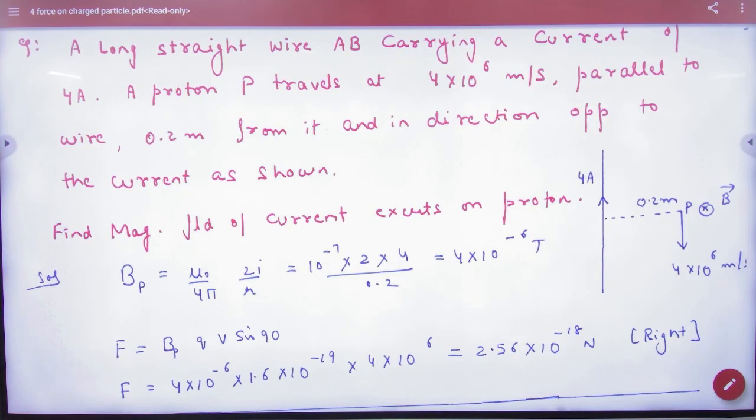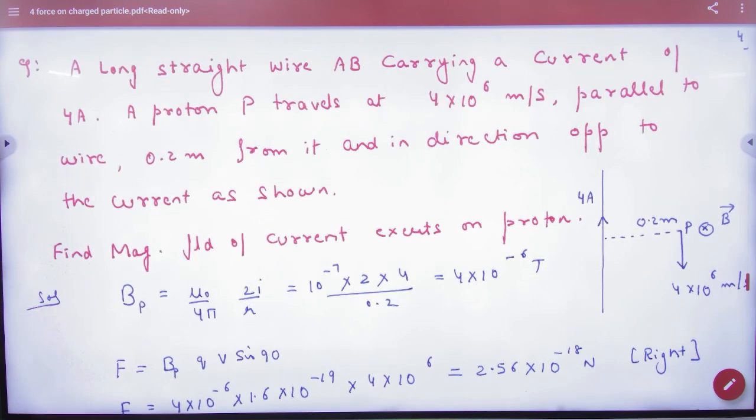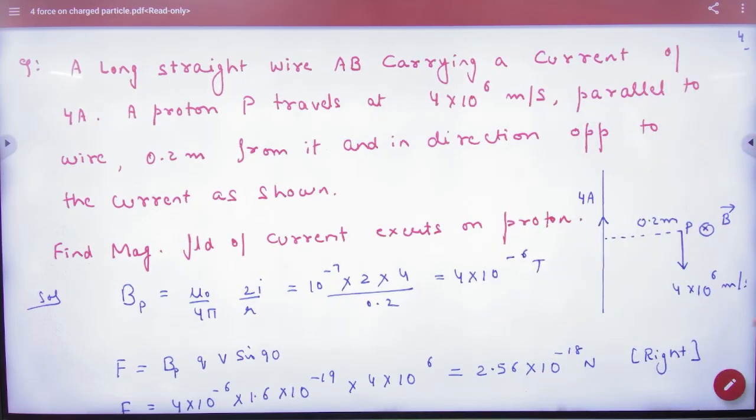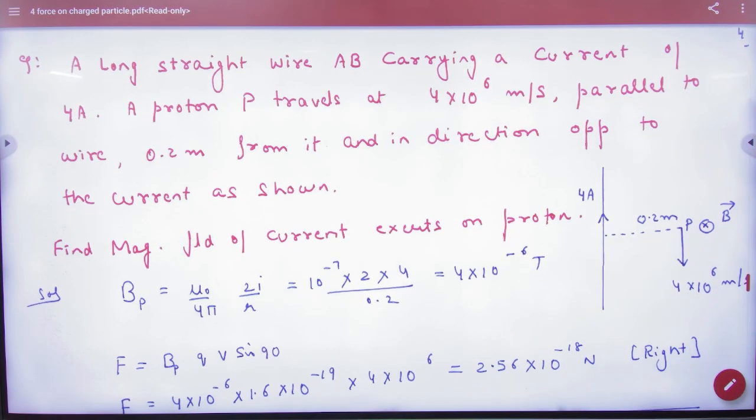For example, a long straight wire AB carrying a current of 4 amperes. A proton P travels at 4×10⁶ meters per second. This proton travels parallel to the wire, 0.2 meters from it, in the direction opposite to the direction of the current.